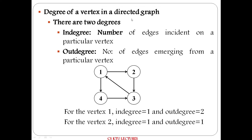In the case of a directed graph, there are two degrees: in-degree and out-degree. Consider vertex 3. How many incoming edges are connected? Vertex 2 provides one incoming edge and vertex 4 provides one incoming edge, so there are two incoming edges total. The in-degree of vertex 3 is 2. For out-degree, vertex 3 has one outgoing edge, so the out-degree of vertex 3 is 1.